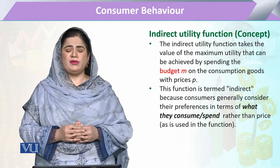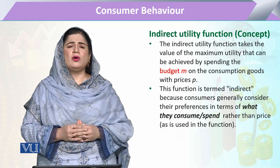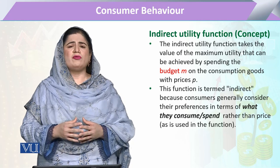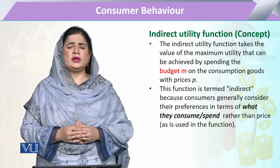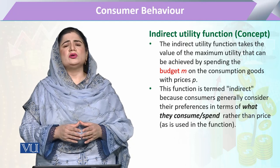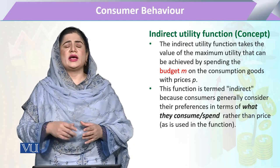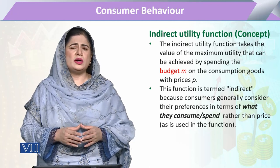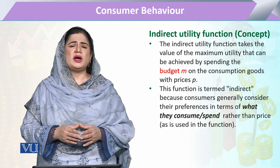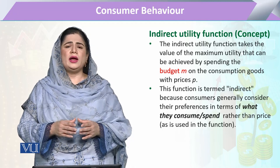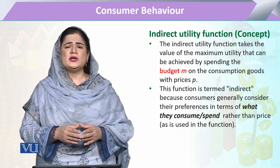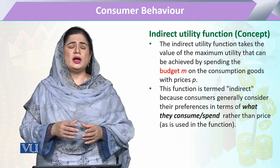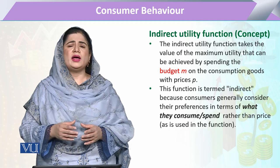The indirect utility function captures what the consumer is going to spend on the purchase of a commodity and, if the price has changed, how the consumer will adjust his expenditure related to that commodity. The consumer maximizes his utility, and this decision is assessed through the change in his consumption expressed in the form of expenditure.